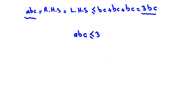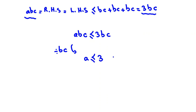We can divide both sides by BC since B and C are positive. So A ≤ 3. Because A is a positive integer, we have three cases: A = 1, A = 2, and A = 3.